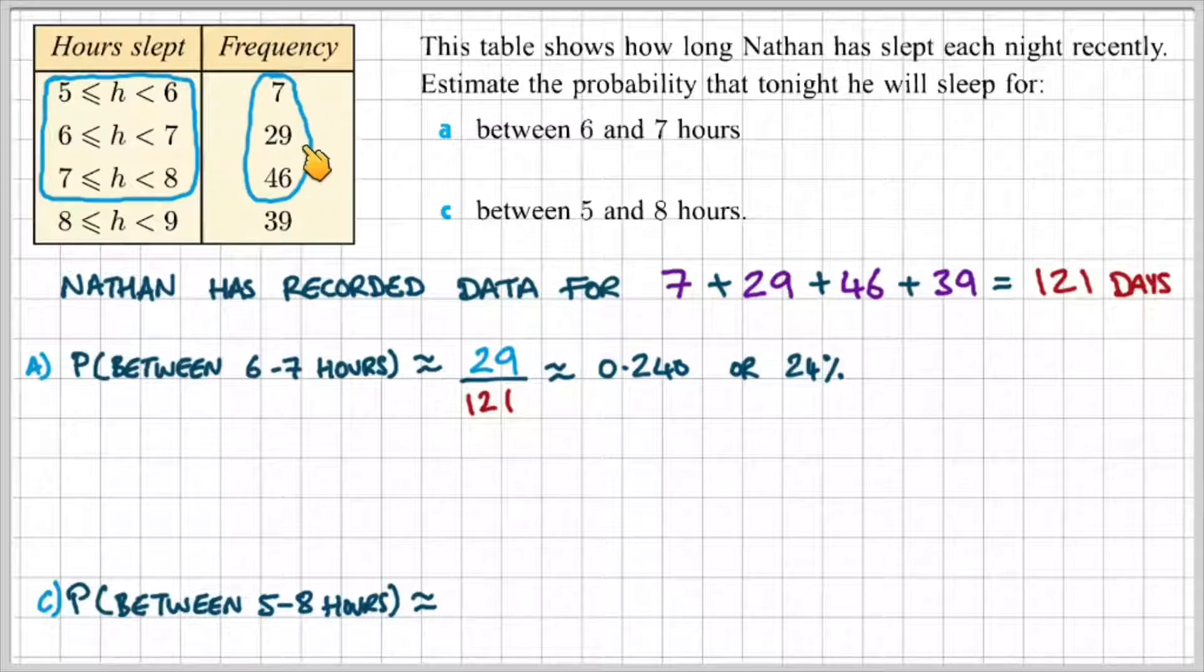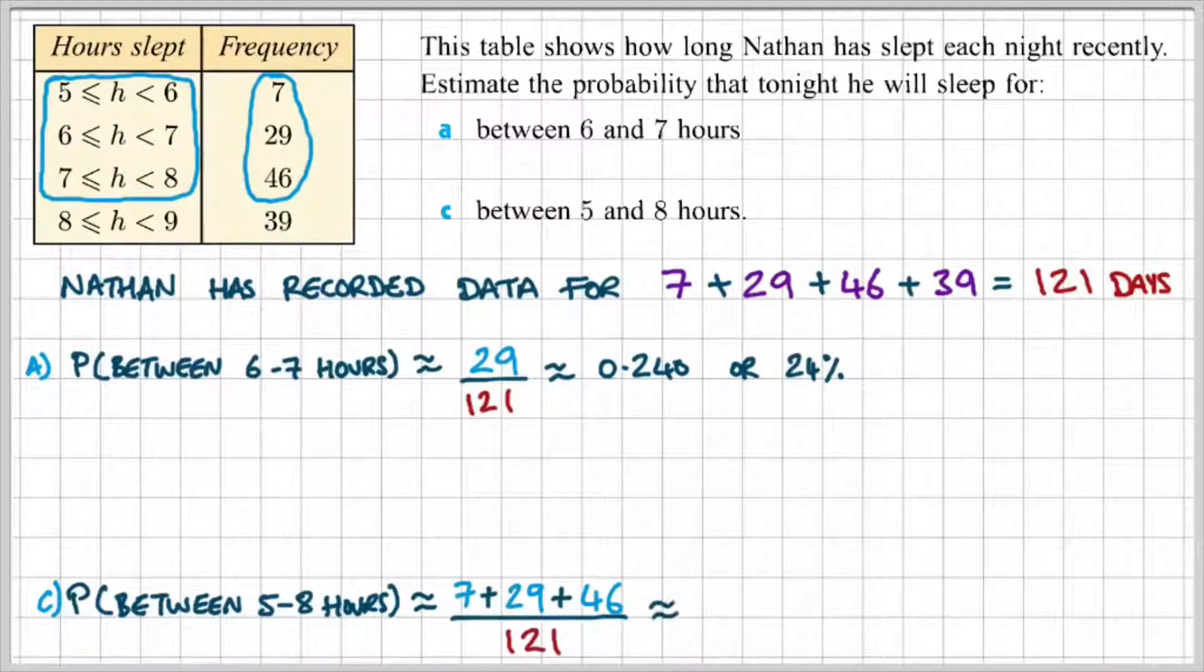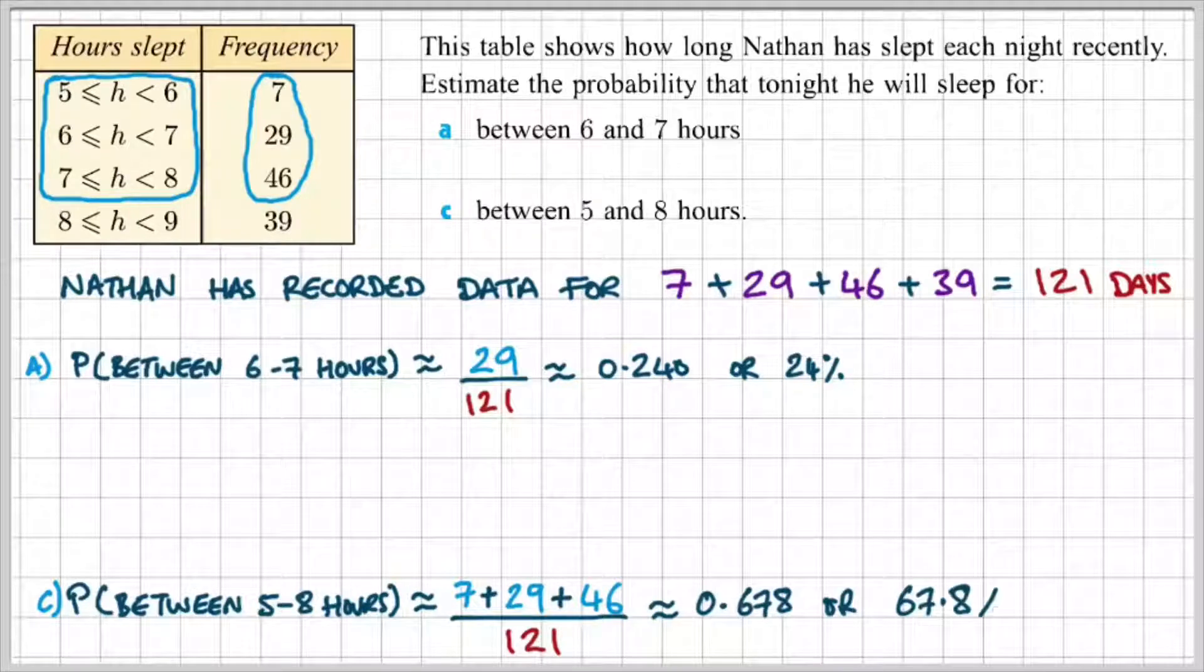So, we're going to add 7, 29, and 46 days altogether to give us a probability of 0.678, or around 70%.